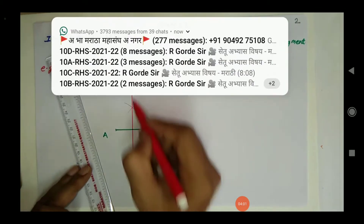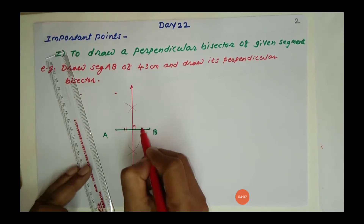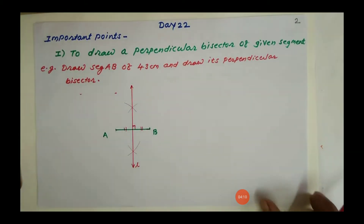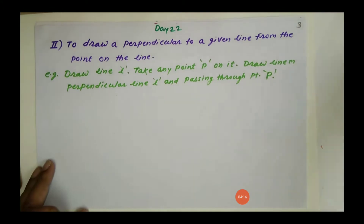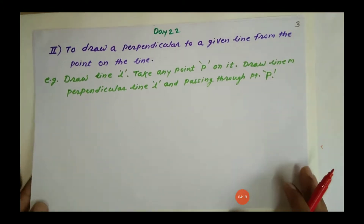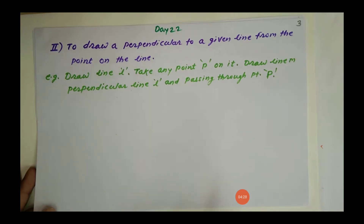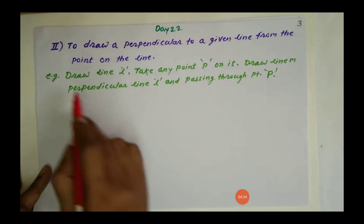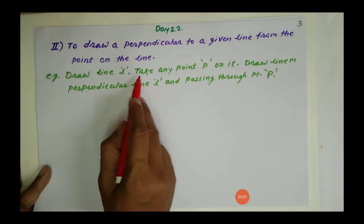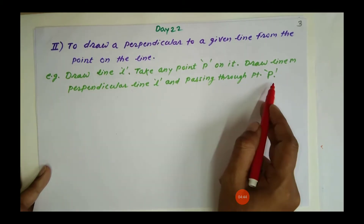Draw a line which passes through the intersection of the arcs — this is the perpendicular bisector of segment AB. The next construction is to draw a perpendicular to a given line from a point on the line. For example: draw line L, take any point P on it, and draw line M perpendicular to line L passing through point P.